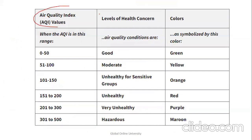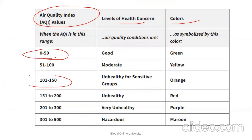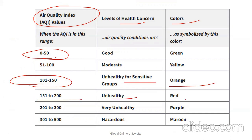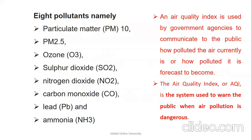The Air Quality Index (AQI) levels and colors: 0–50 Good (green), 51–100 Moderate (yellow), 101–150 Unhealthy for sensitive groups (orange), 151–200 Unhealthy (red), 201–300 Very Unhealthy (purple), and above 300 Hazardous (maroon). Pollutants measured include particulate matter PM2.5, ozone, sulfur dioxide, nitrogen dioxide, carbon monoxide, lead, and ammonia. The AQI is used by government agencies to communicate to the public how polluted the air is.